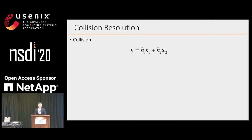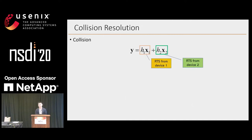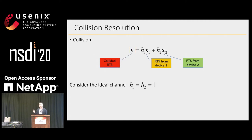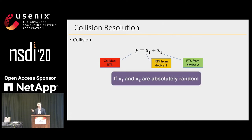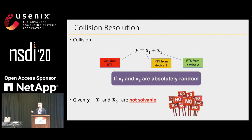Let's look at the collision equation. X1 and X2 are two RTS from different devices, and Y is the collided signal. Let's consider a simple scenario where there is no fading on the channel, so we have this equation. If X1 and X2 are random, we know that only given Y, it is impossible to resolve X1 and X2, which also explains why collision is not resolvable.